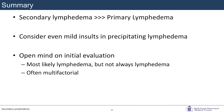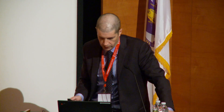In summary: secondary lymphedema is much more common than primary lymphedema, though we can learn from primary lymphedema mechanisms to understand who's at risk for secondary lymphedema and guide treatments. Consider even mild insults as precipitating lymphedema, and keep an open mind during initial evaluation — just because a patient comes to you labeled with lymphedema doesn't mean they actually have it. It's probably most likely lymphedema, but not always, and it's often multifactorial, making it the most difficult to treat. Thank you.